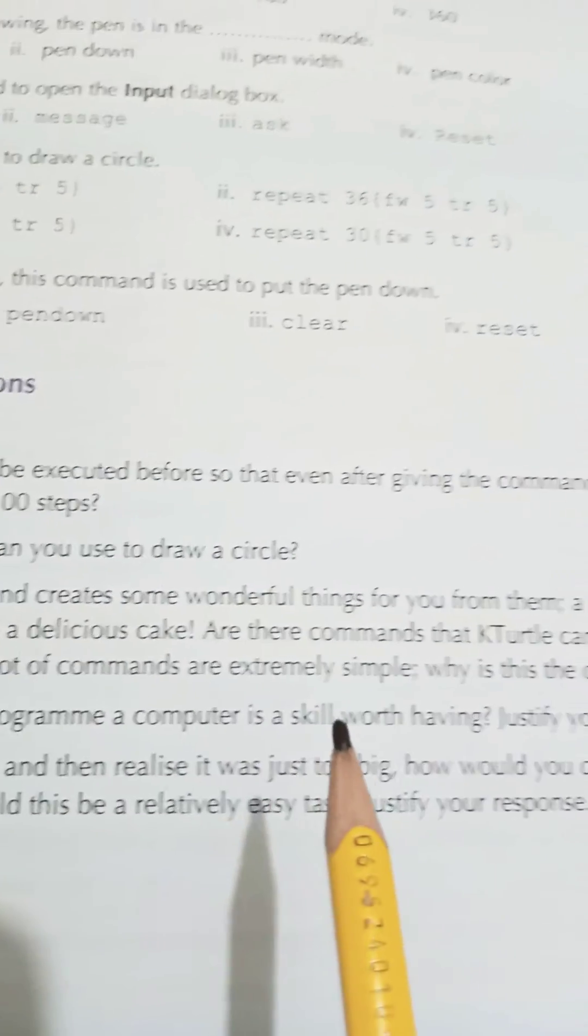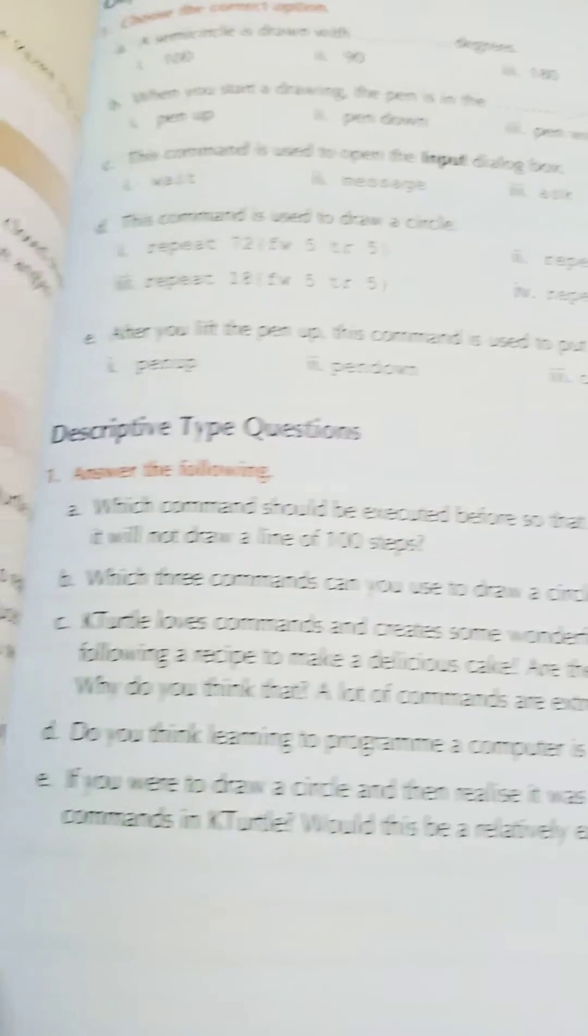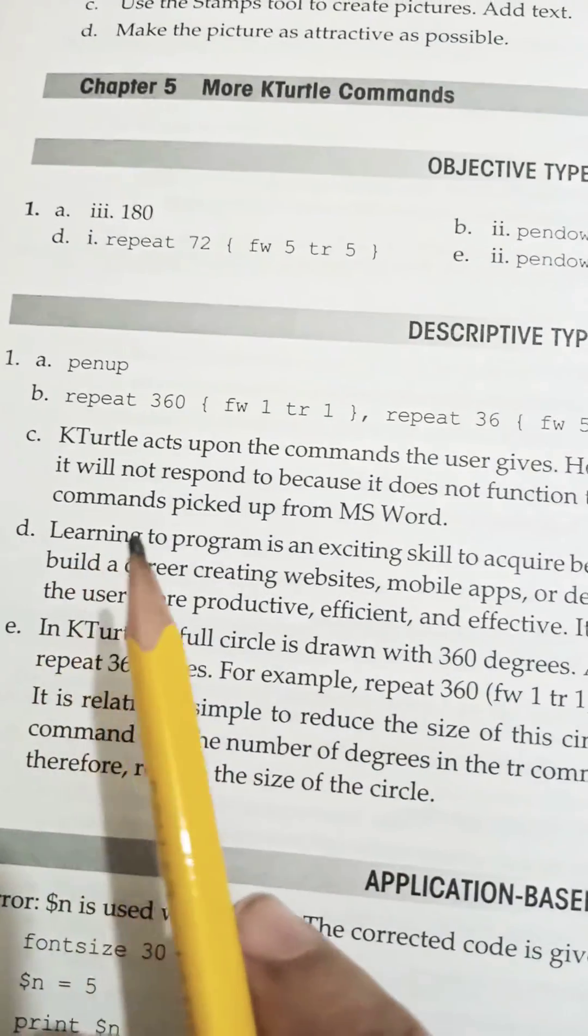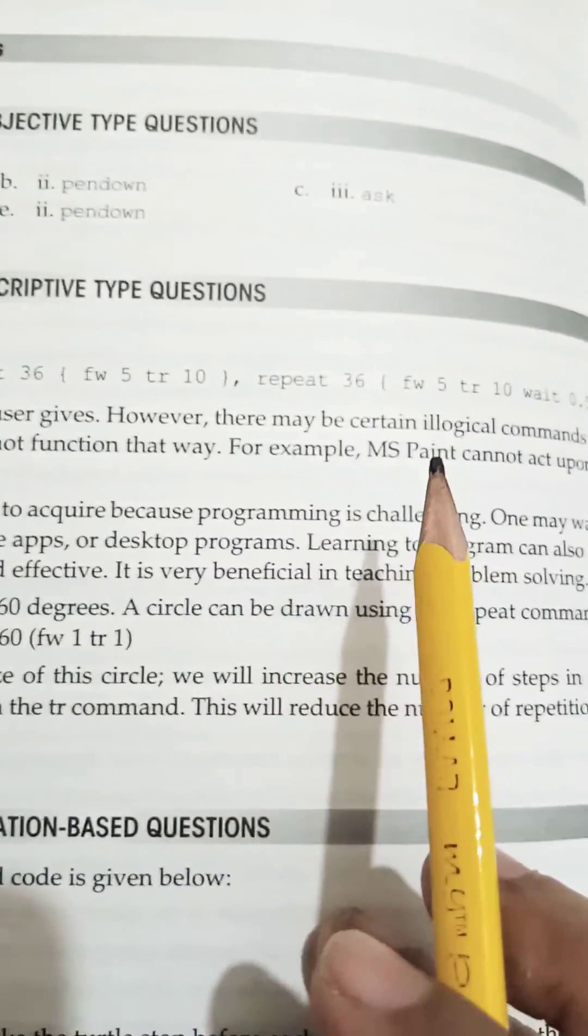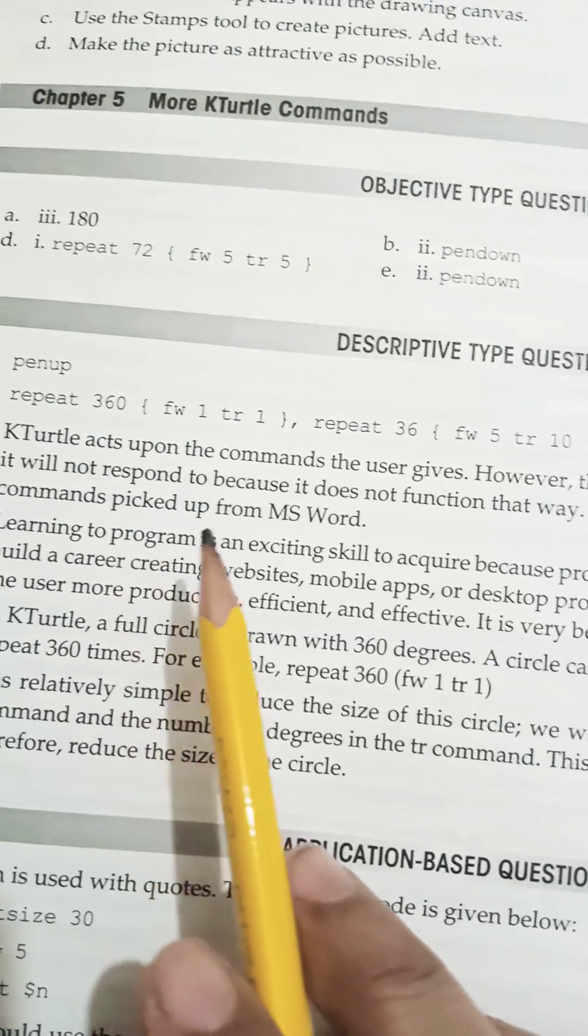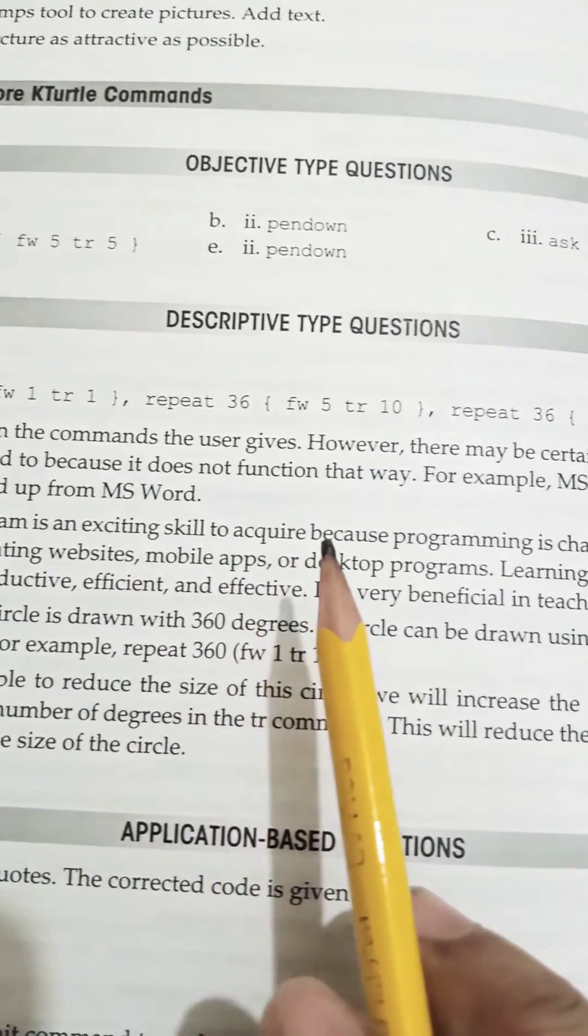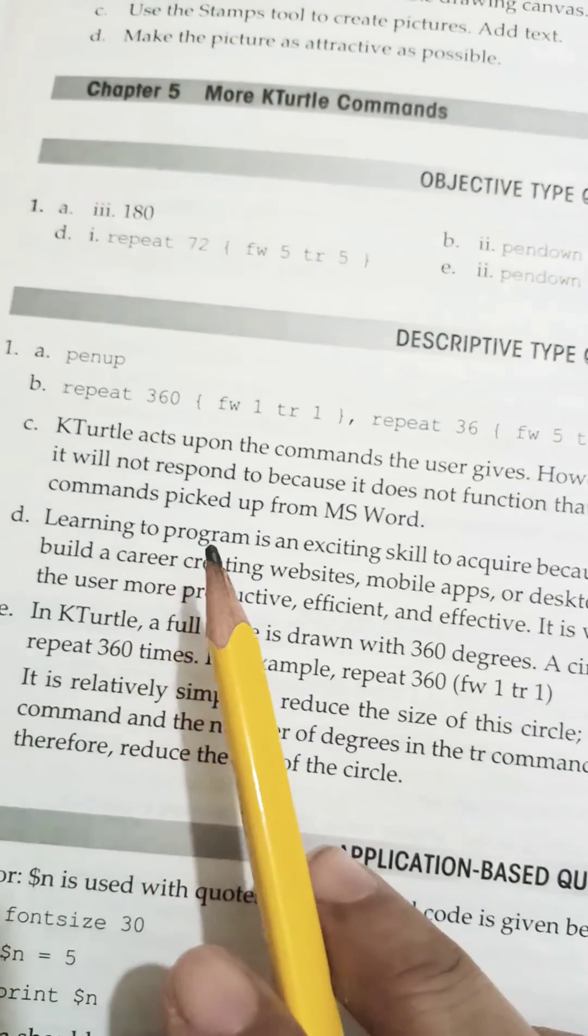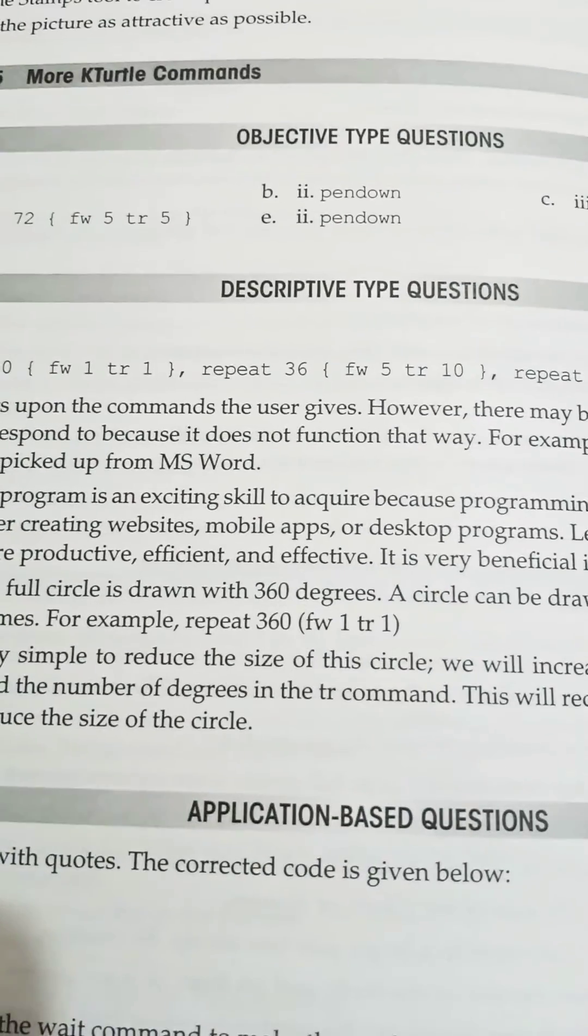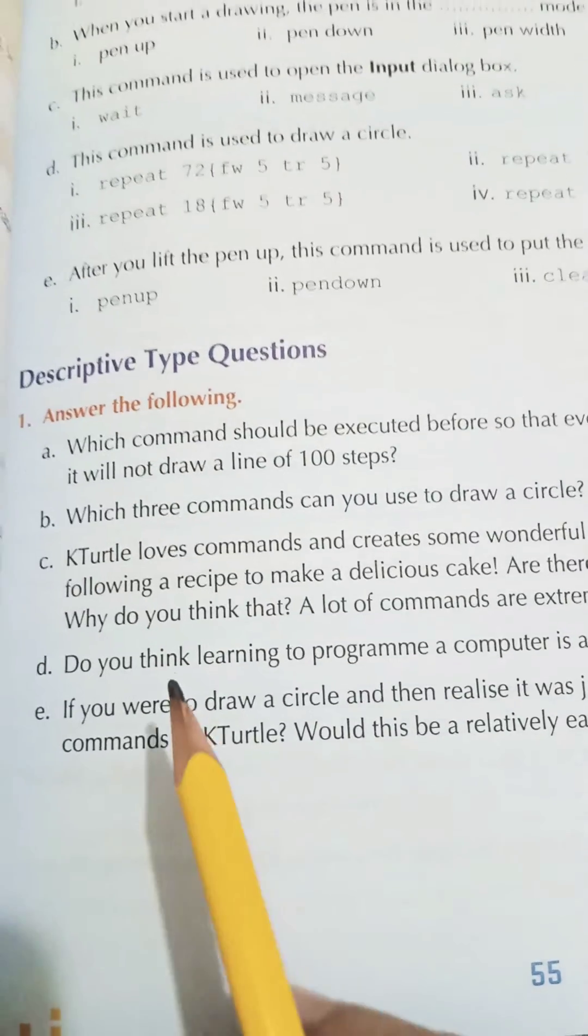The answer is K-Turtle acts upon the commands the user gives. However, there may be certain illogical commands that it will not respond to because it does not function that way. For example, MS Pinch cannot act upon the commands picked up from MS Word. Okay, so beta this was all for today.